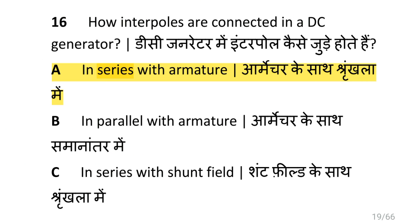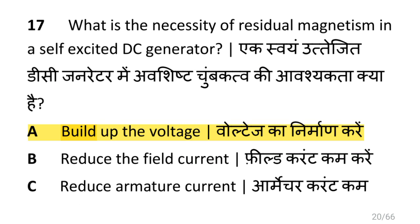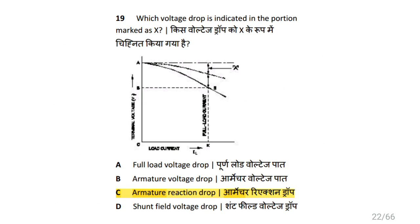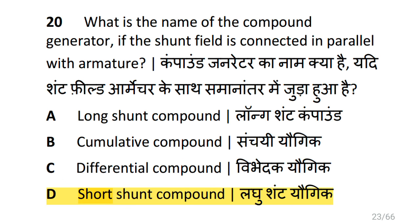How are interpoles connected in a DC generator? In series with armature. What is the necessity of residual magnetism in a self-excited DC generator? That is to build up the voltage. Which are the two points at which brush contact resistance is measured in DC machines? That is resistance between brush and commutator. Which voltage drop is indicated in the portion marked as X? That is armature reaction drop, i.e., IA RA drop.